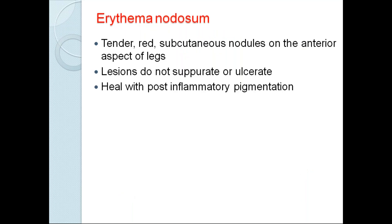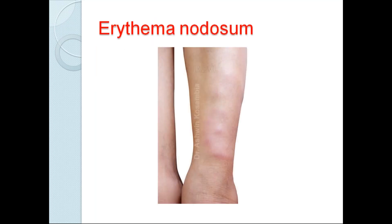Next is erythema nodosum — another important and commonly seen condition. Tender red subcutaneous nodules will be present over the anterior aspect of the legs. This is more commonly seen in females than males. The lesions do not suppurate or ulcerate — only red erythematous nodules are present, healing with post-inflammatory hyperpigmentation. The lesions are quite tender, and there will be increased temperature over the lesions compared to surrounding skin.